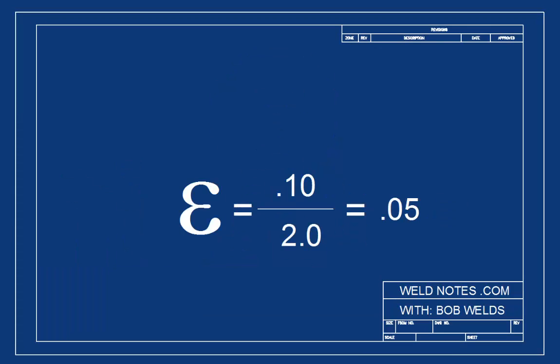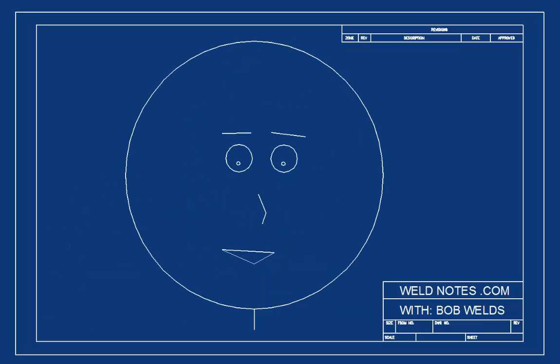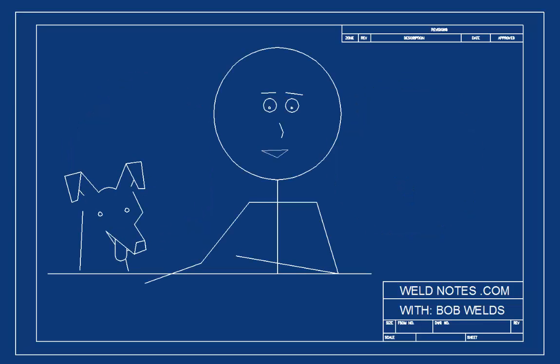When we divide inches by inches the units cancel out. They disappear. What that means is the strain would be 0.05 no matter what units of length we used.